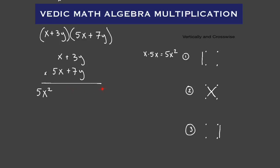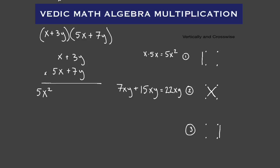Step number two, we're going to do crosswise: X times seven Y plus five X times three Y. X times seven Y gives us seven X Y. Plus three Y times five X gives us 15 X Y. Seven X Y plus 15 X Y — seven plus 15 gives us 22 — so we have 22 X Y. That's our second term: plus 22 X Y.